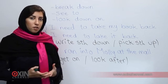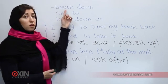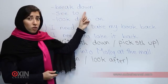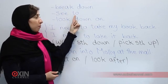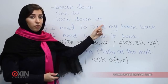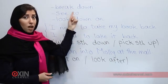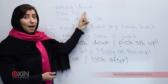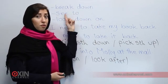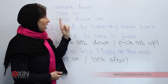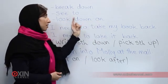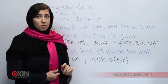Phrasal verbs consist of one verb and an adverb, a preposition, or both. So in 'break down' we have the verb plus an adverb. In 'see to' we have the verb plus a preposition, and in 'look down on' we have the verb plus an adverb and a preposition.